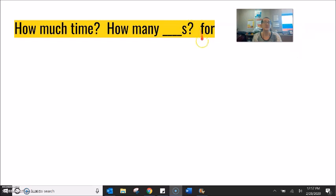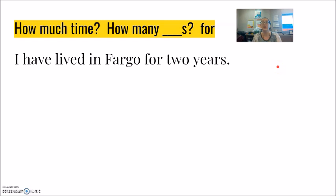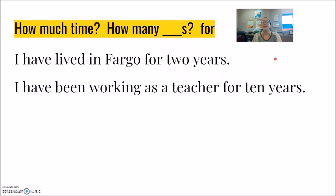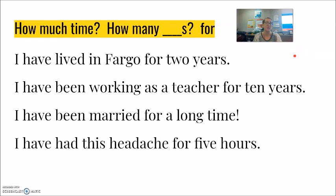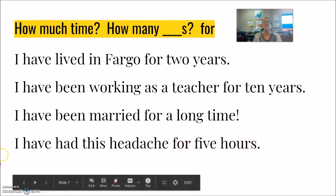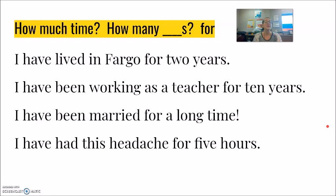We use for as the preposition of time when we are talking about how much time — how many years, days, minutes. And we cannot use for with a complete sentence. 'I have lived in Fargo for 2 years' — how many years. 'I have been working as a teacher for 10 years.' This piece can also move to the beginning: 'For 10 years, I have been working as a teacher.' 'I have been married for a long time.' 'I have had this headache for 5 hours.' We never put for with a complete sentence — 'I have lived in Fargo for I graduated from college' — never, absolutely not.